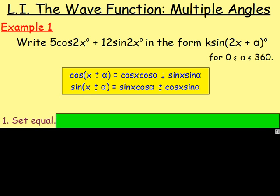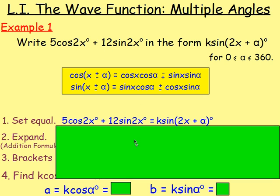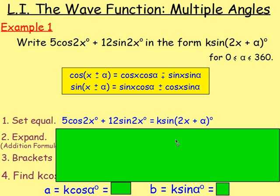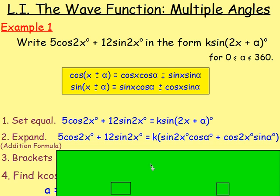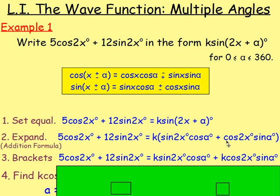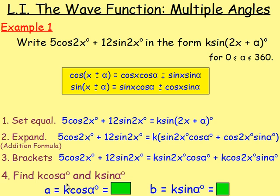The first thing you want to do is set them equal: 5cos2x plus 12sin2x equals k·sin(2x + α). You then expand that using the addition formula, so you have k times the expansion of sin(2x + α). Remove the brackets and you get k·sin2x·cosα plus k·cos2x·sinα. From there you need to find the values of k·cosα and k·sinα. Here it's going to be the coefficients of cos2x — the coefficient of cos2x is k·sinα.